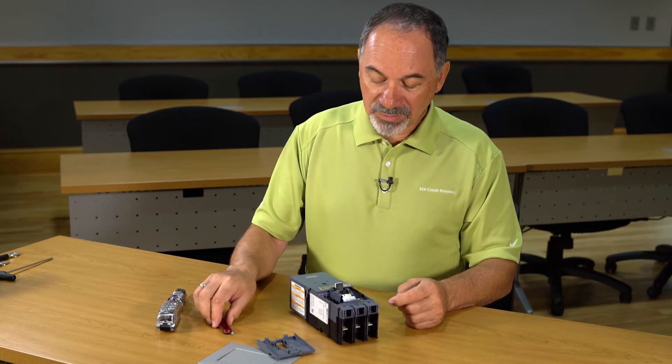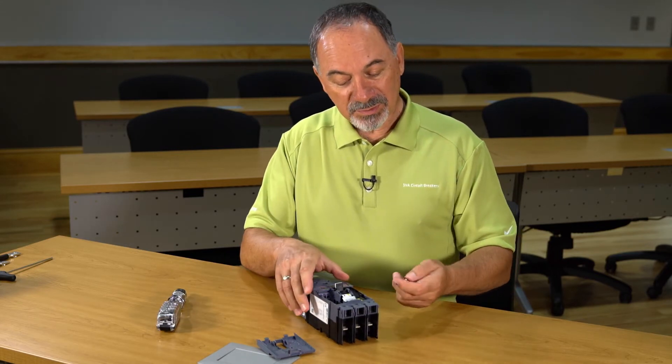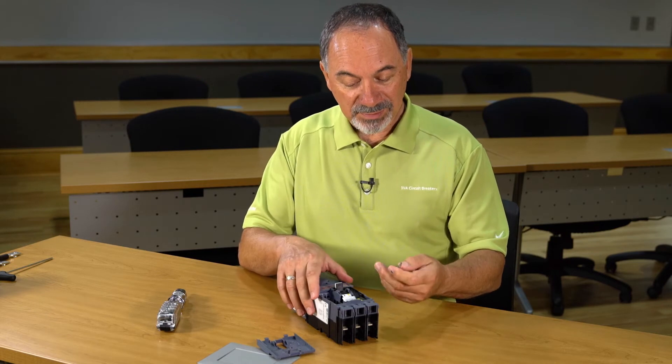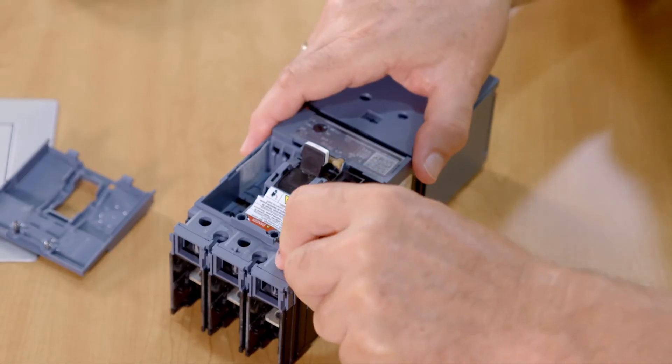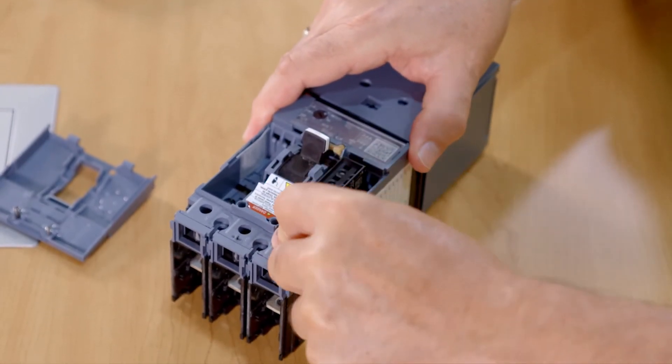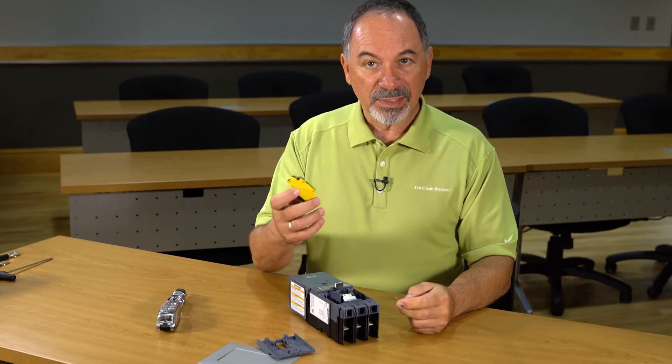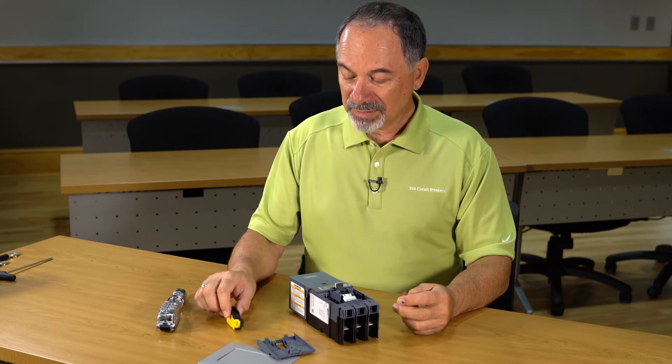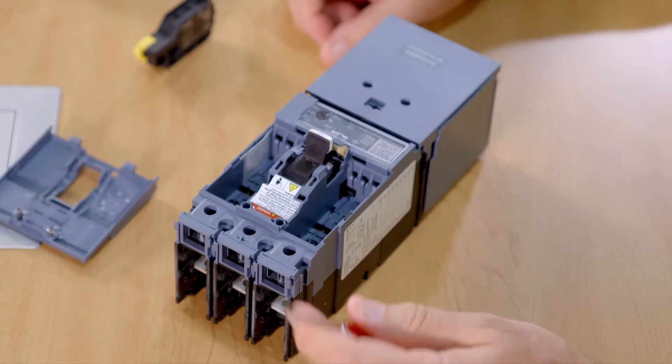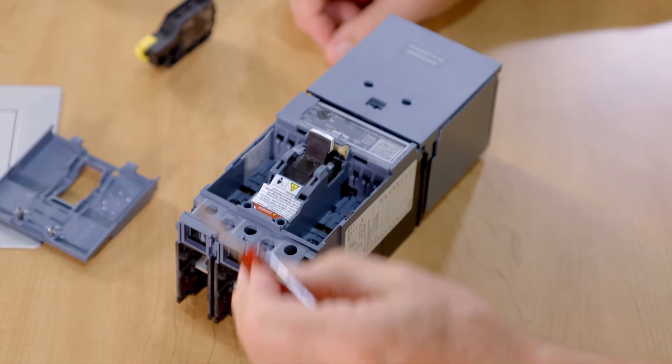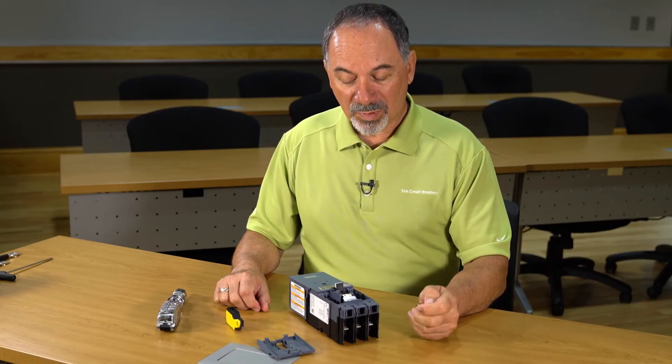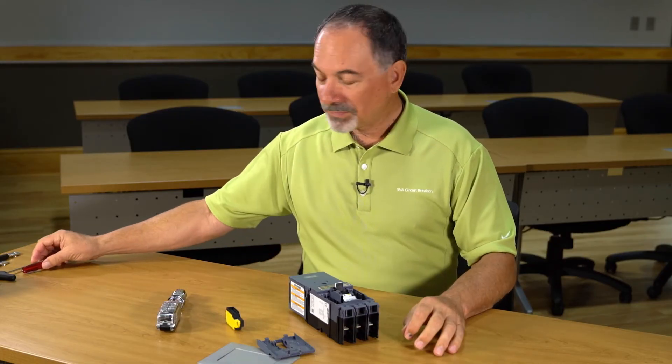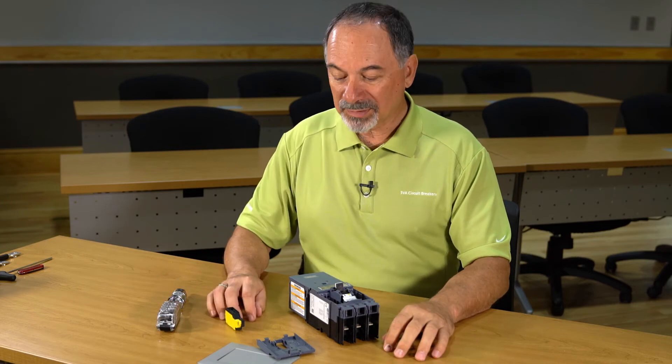To remove that accessory, in the event that you install it incorrectly, I usually use a blunt knife or a screwdriver. I can grab a hold of that accessory and remove it and we've installed and removed an internal accessory. These internal accessories, we can put up to six accessories in one 125 amp 3BA circuit breaker as required.